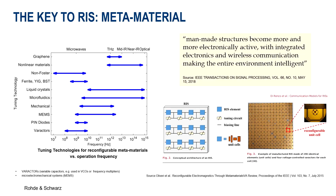The key to RIS are metamaterials — man-made structures that allow the manipulation of electromagnetic waves impinging on the surface in terms of phase, amplitude, and polarization. The reflected wave angle can be controlled, which allows a dynamic control of the coverage area. There are different kinds of metamaterials supporting different frequency ranges. The most promising ones are semiconductor-based, using varactors or PIN diodes.